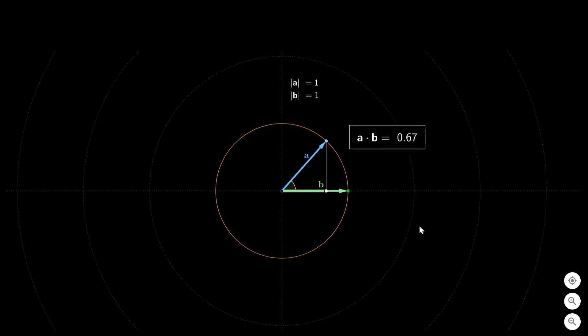And what about the dot product between two unit vectors? For example, here a and b are both unit vectors because they are in the unit sphere. Then what we see is that the dot product varies between 1 and minus 1. And the dot product is 0 whenever the two vectors are orthogonal to each other.